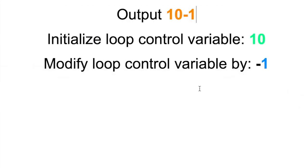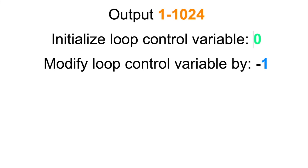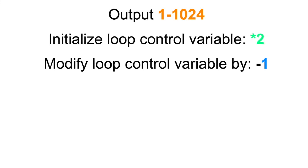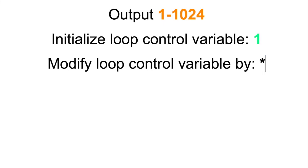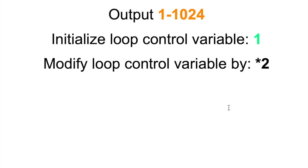Okay, let's go from 1 to 1024, and each time through the loop let's multiply the value by 2. We're going to initialize it to 1 and multiply the value by 2 each time through the loop. Basically we want all powers of 2, including 1. Go from 1 to 1024, so multiply the loop control variable by 2 each time through. Go ahead and pause your video at this point and try to come up with the solution.